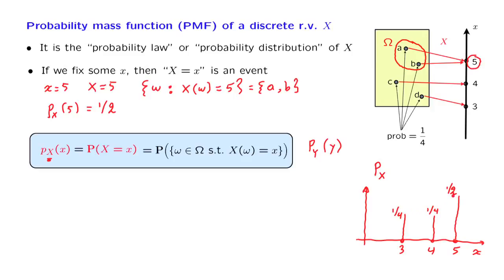And we can produce plots of this function. In this particular example, the interesting values of x are 3, 4, and 5. The value of 5 is obtained with probability 1 half. The value of 4 corresponds to the outcome C, which has probability 1 fourth. And the value of 3 is also obtained with probability 1 fourth, because the value of 3 is obtained when the outcome is D, and that outcome has probability 1 fourth. So the probability mass function specifies, for any little x, the probability that our random variable takes on that particular value.